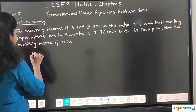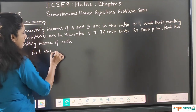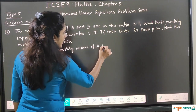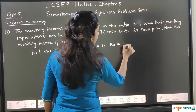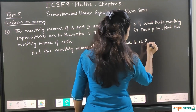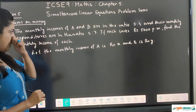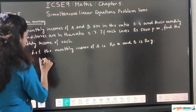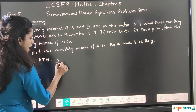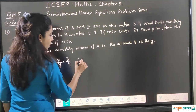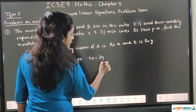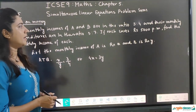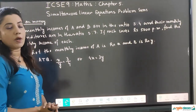Let the monthly income of A be rupees X and B be rupees Y. The monthly incomes are in the ratio 3 is to 4, so according to the question, X upon Y is equal to 3 upon 4, which gives us 4X equals 3Y — this is equation 1. Their monthly expenditures are in the ratio 5 is to 7, and each saves rupees 5,000 per month.